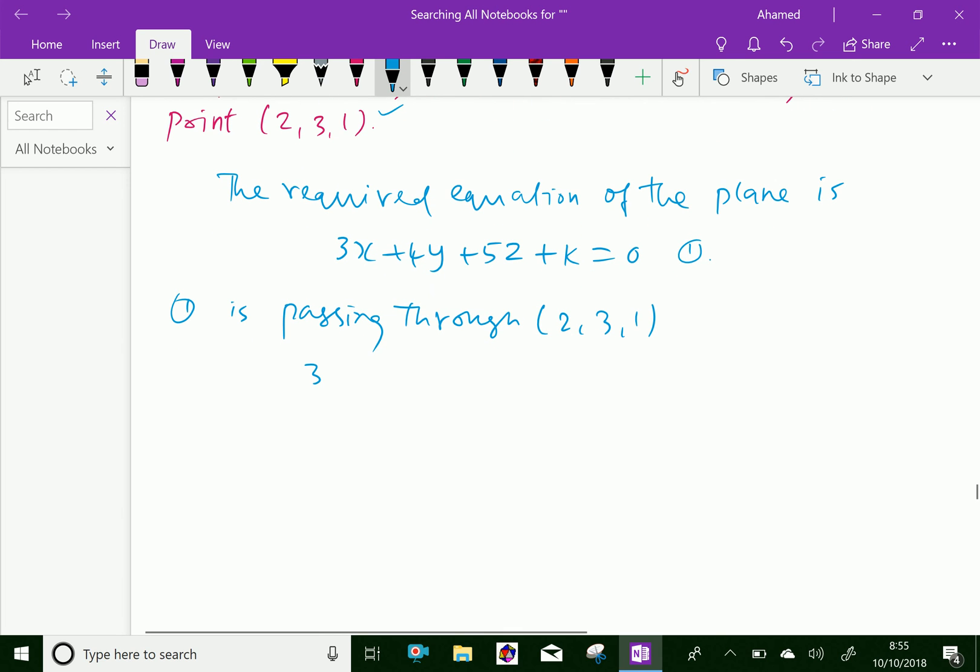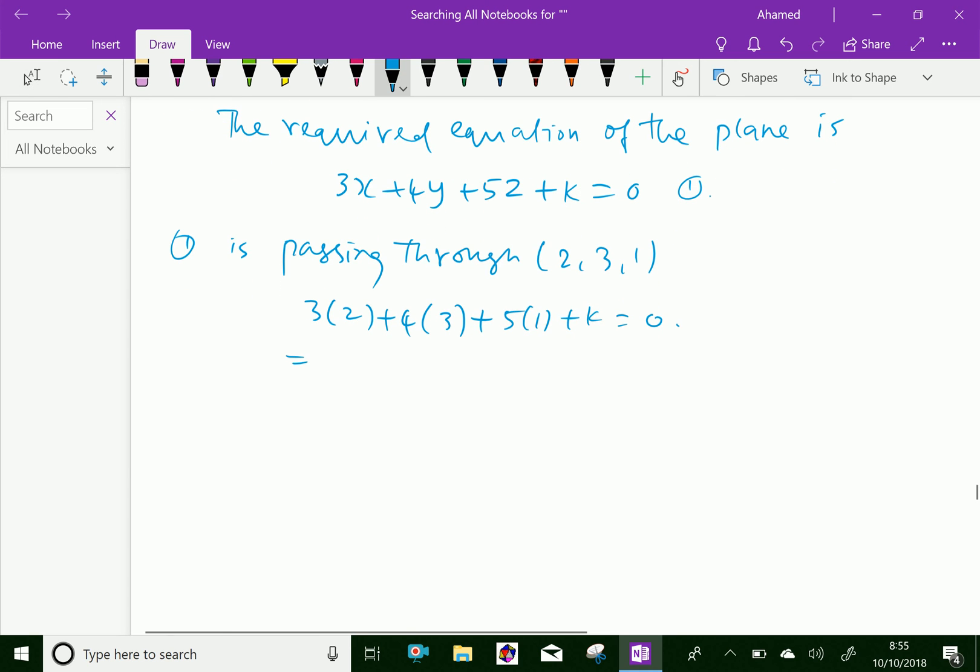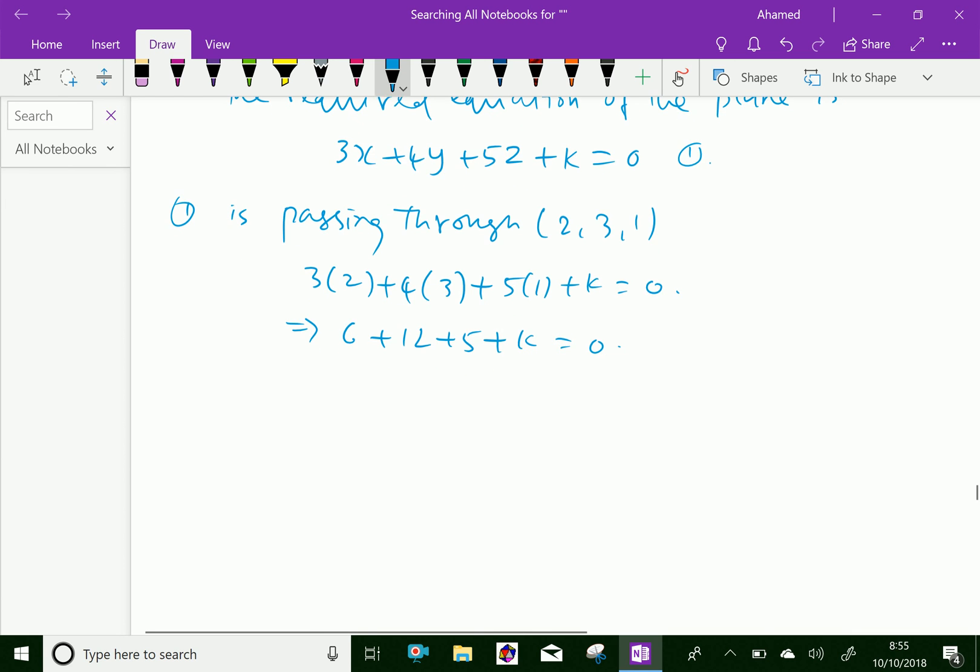That is 3 into 2 plus 4 into 3 plus 5 into 1 plus k equals 0. Therefore, 6 plus 12 plus 5 plus k equals 0. 6 plus 12 is 18, 18 plus 5 is 23.